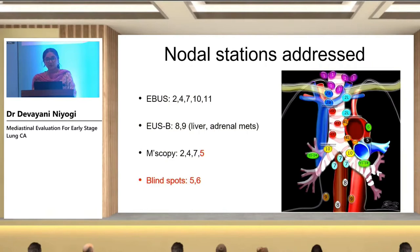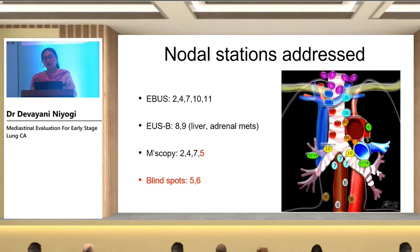These are the ISLC nodal stations. EBUS and mediastinoscopy can assess levels 2 and 4 on both sides, as well as subcarinal nodal station 7. EBUS can additionally evaluate stations 10 and 11 — the hilar and interlobar nodes. Mediastinoscopy pushed in front of the left main bronchus can also reach level 5. However, for both EBUS and mediastinoscopy, the blind spots remain stations 5 and 6. When the EBUS scope is passed through the esophagus, stations 8 and 9 can also be accessed. So our true blind spots in the mediastinum remain stations 5 and 6.